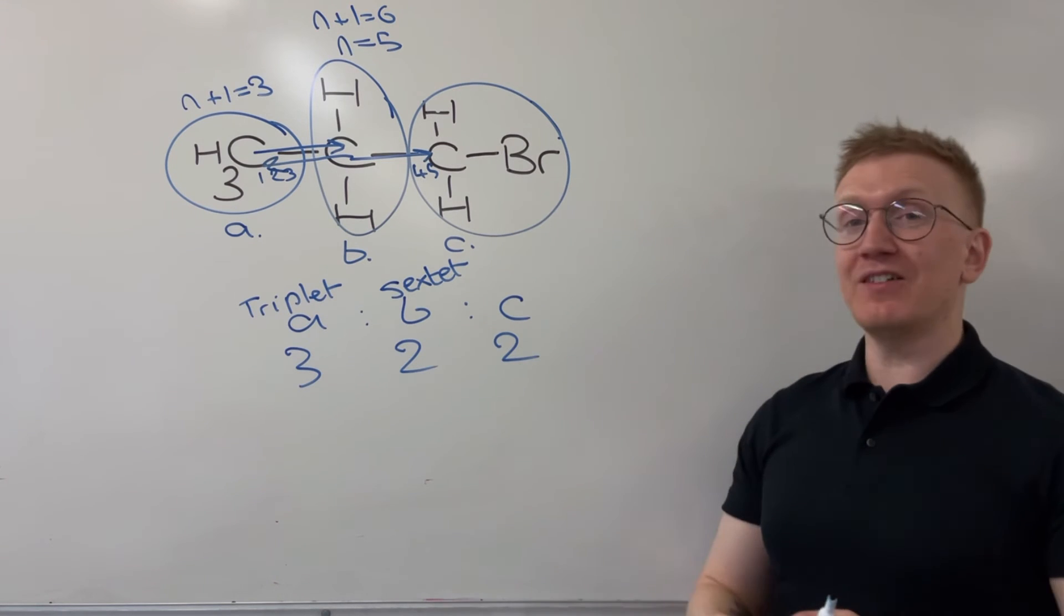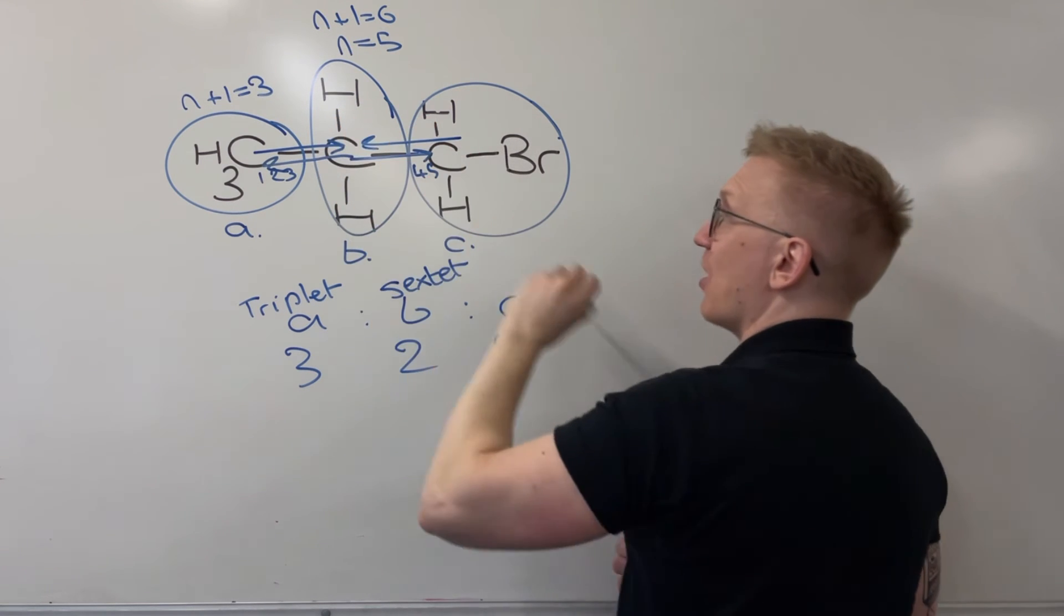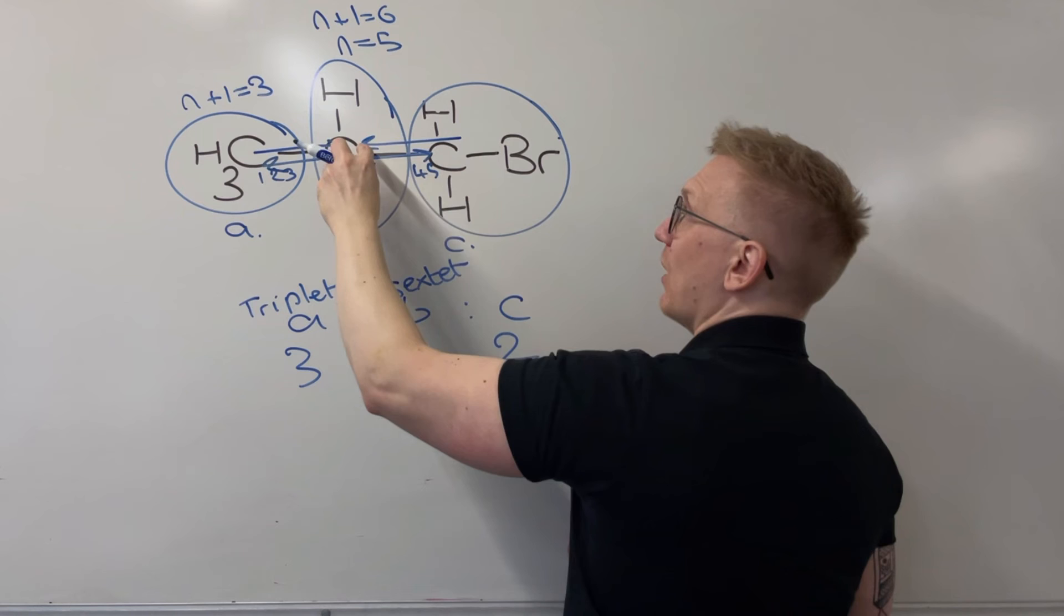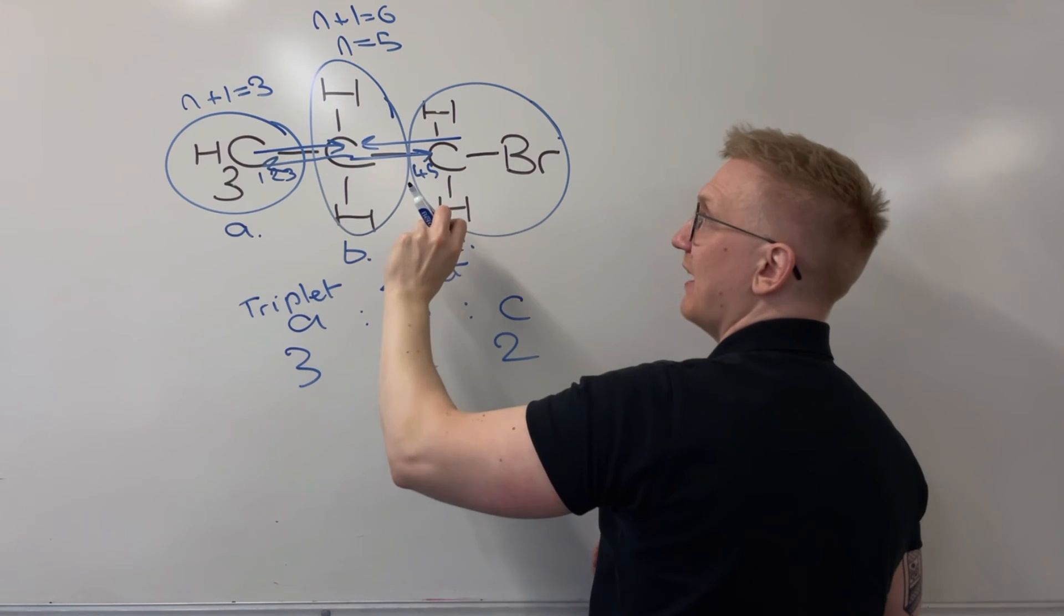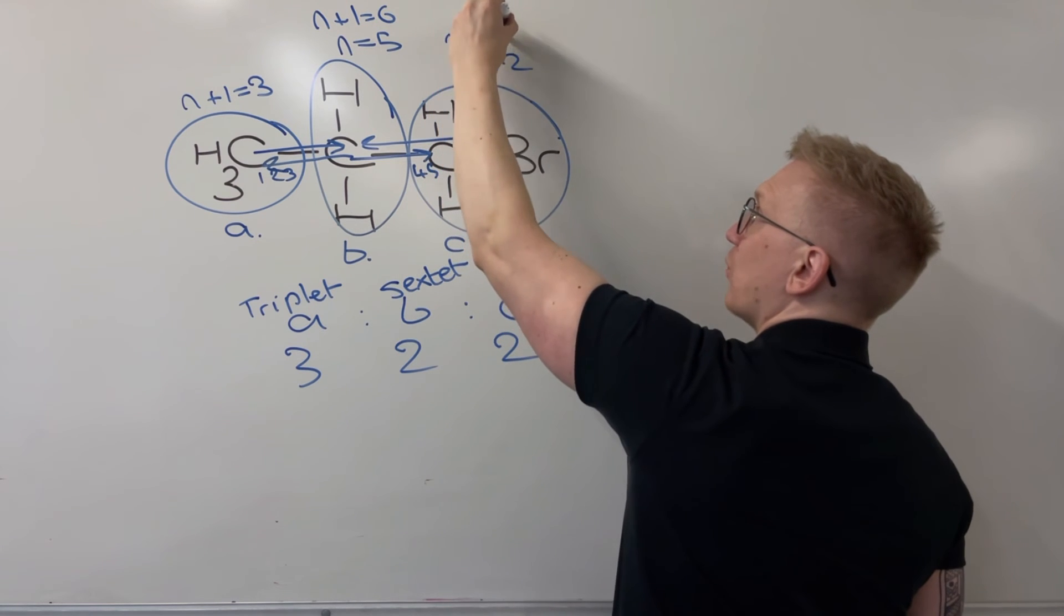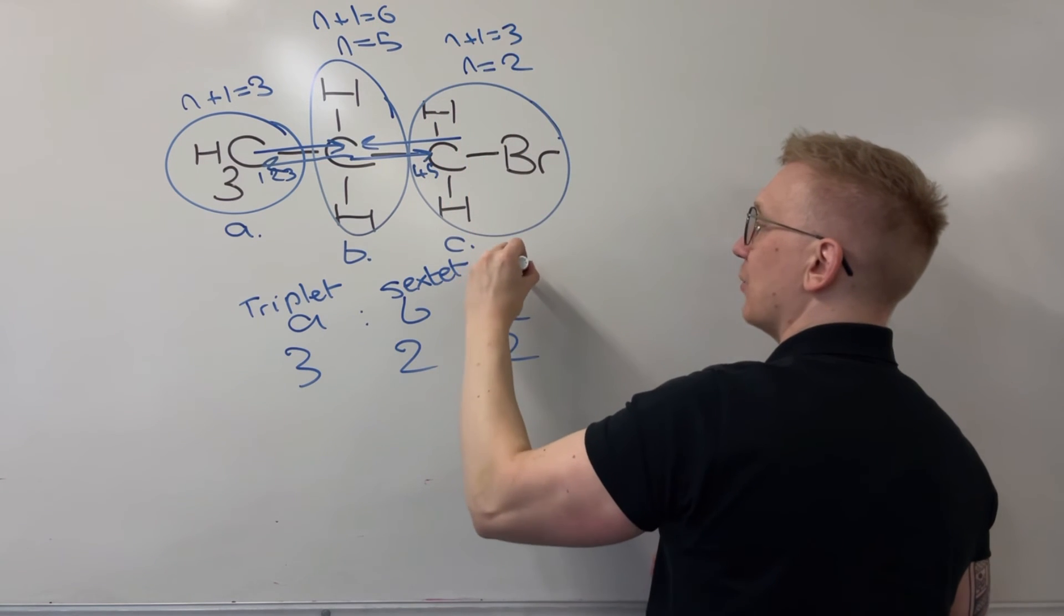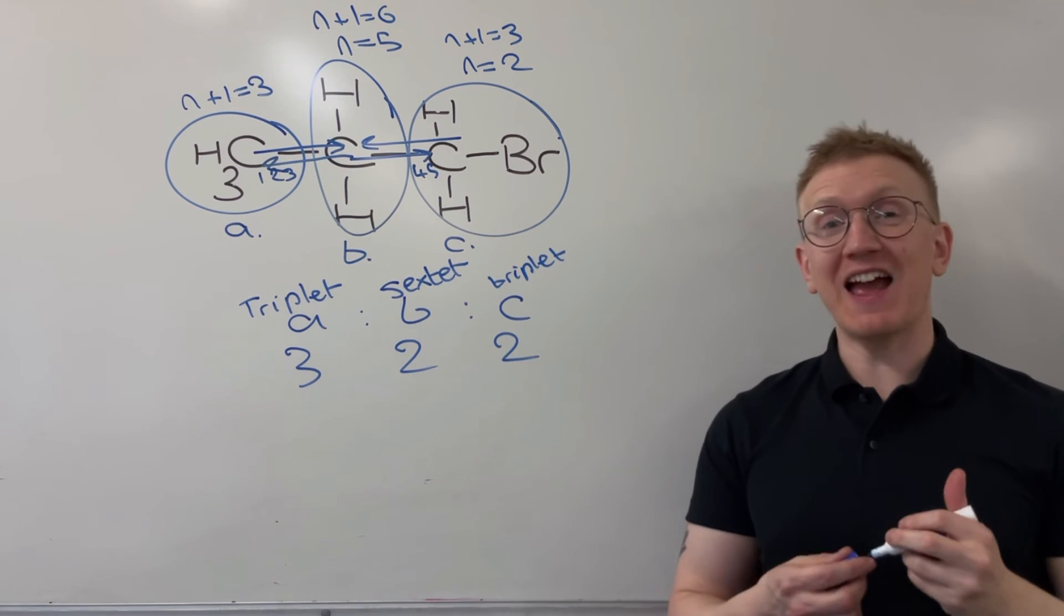What about the final environment over here on the right with the bromine on it? Well again I'm going to go to the next carbon up in this direction. And what I can see is I've got 1, 2. So it's very similar to when I went from this one just here. And so my N value here is going to be 2. N plus 1 is going to be 3. And so I end up with another triplet in my hydrogen NMR spectrum.